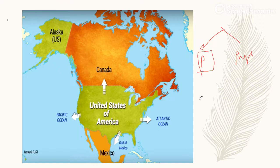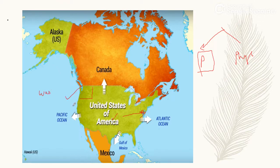اگر ہم political map سے start کریں تو the capital of USA is Washington DC, which is located in the eastern part of United States of America. یہاں ایک بات جو دھیان میں رکھنی ہے: USA میں ایک state ہے جسے Washington state بولا جاتا ہے جو کہ western part of USA میں ہے۔ تو Washington and Washington DC both are different.